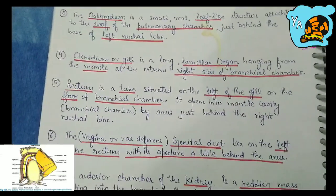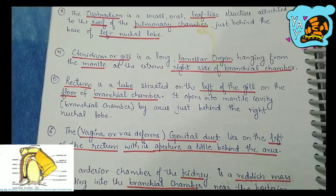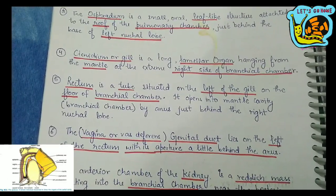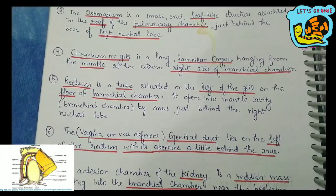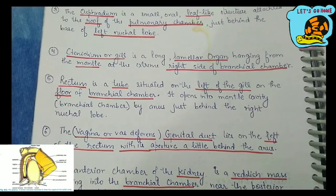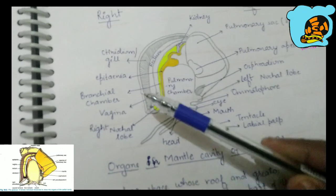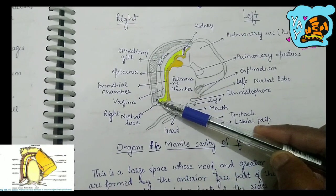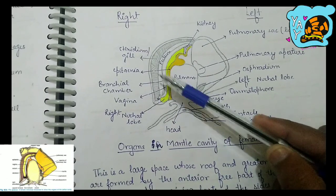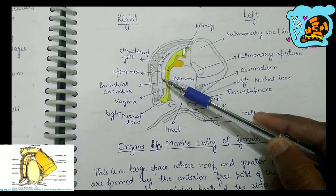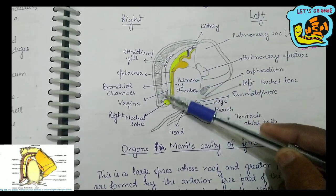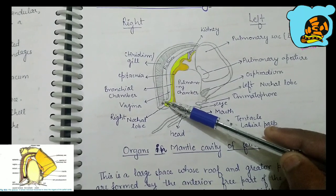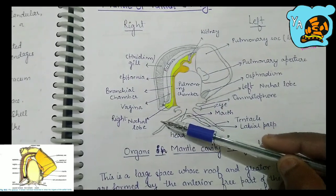The next structure is the rectum. The rectum is a tube situated on the left side of the gill, on the floor of the branchial chamber. It opens into the mantle cavity — or specifically the branchial chamber — by the anus, just behind the right nuchal lobe. In the diagram, this tube represents the rectum, present on the floor of the mantle cavity, opening into the anus just behind the right nuchal lobe.